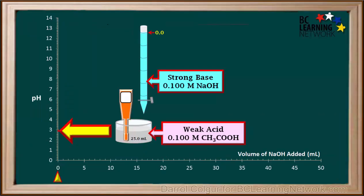We'll start at the point where we haven't added any base to the 0.1 molar CH3COOH yet. This is just the pH of 0.1 molar acetic acid, CH3COOH. Using an ice table and Ka calculations, we can determine that the pH of 0.1 molar CH3COOH is 2.87.